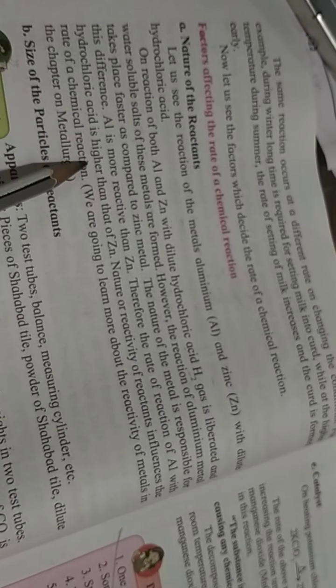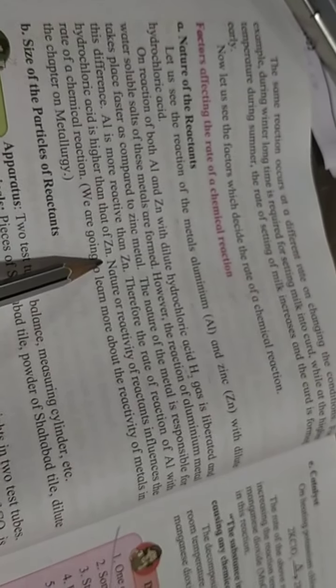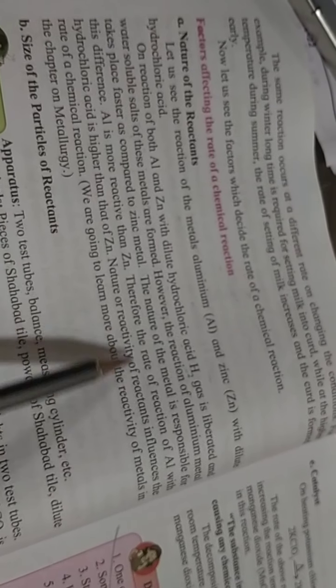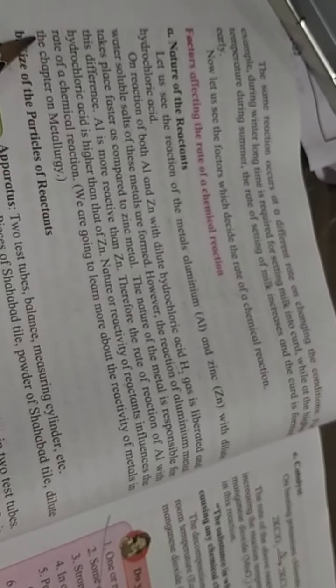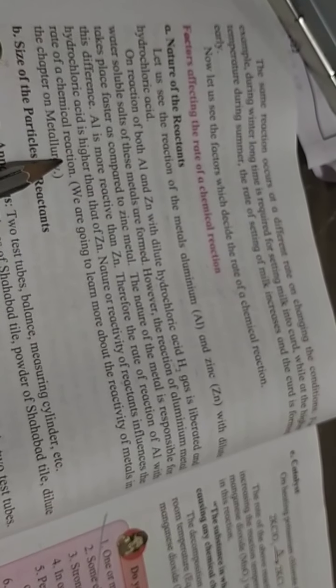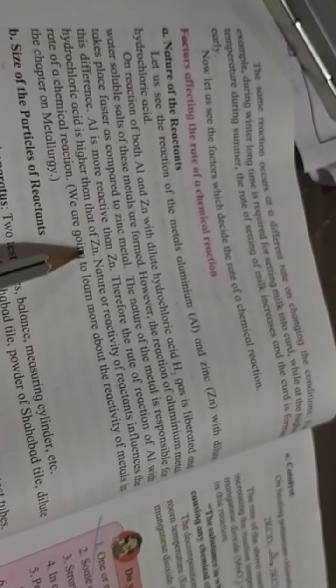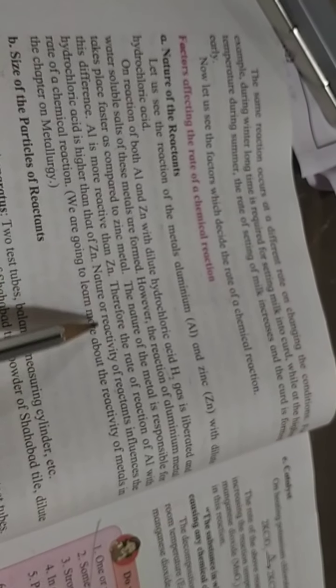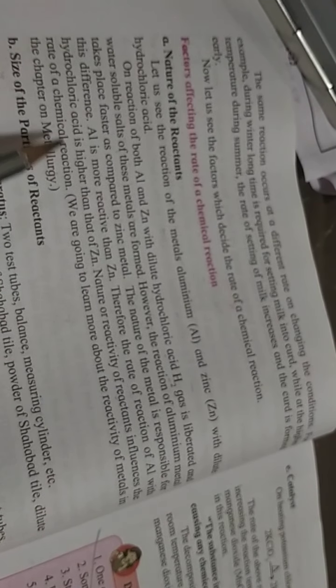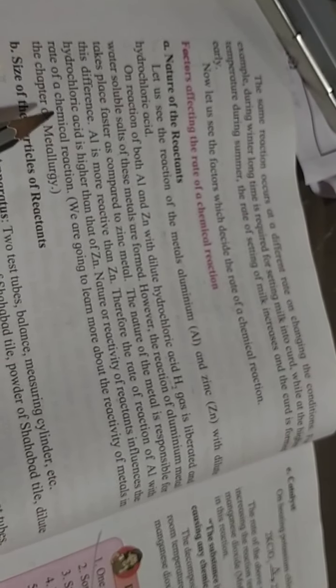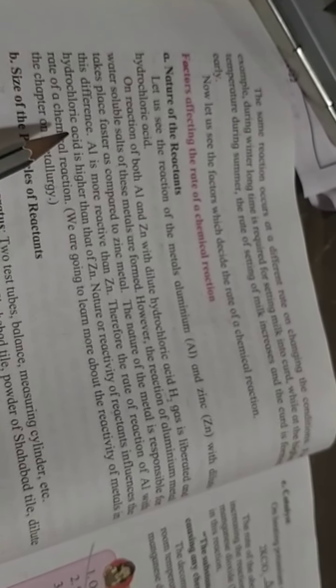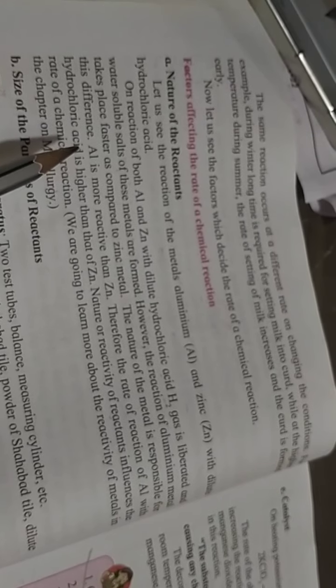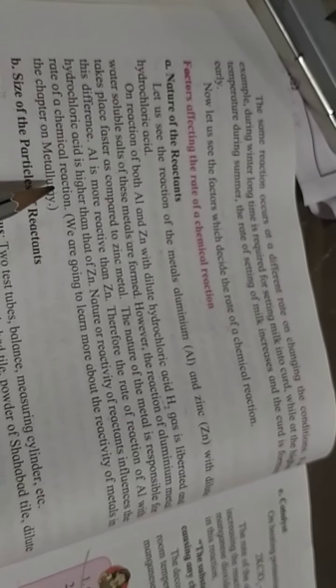Therefore, the rate of reaction of aluminium with hydrochloric acid is higher than zinc. The nature of reactivity of reactant influences the rate of the chemical reaction. Meaning if one element is more reactive, then it will react faster.